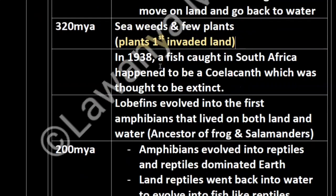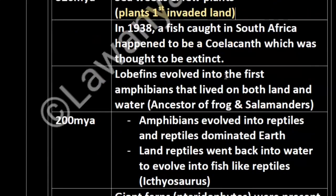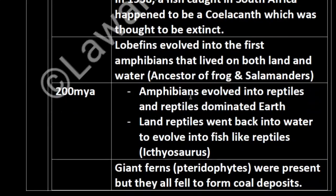In 1938, a coelacanth fish was caught in South Africa — a fish we thought had gone extinct. Lobe-fins (lobefins) evolved into the first amphibians that lived both on land and in water. The amphibians are an ancient version — hence ancestors of frogs and salamanders, which are amphibians.